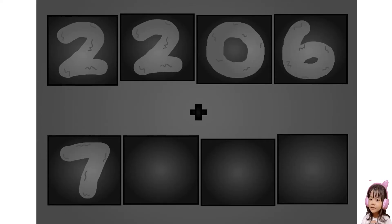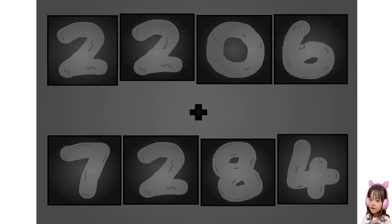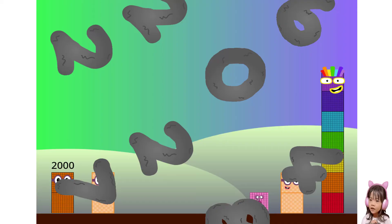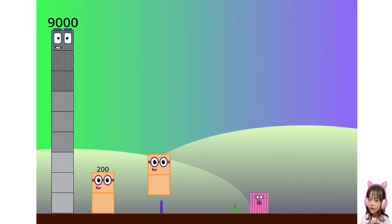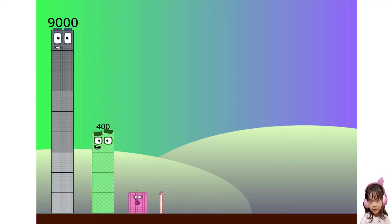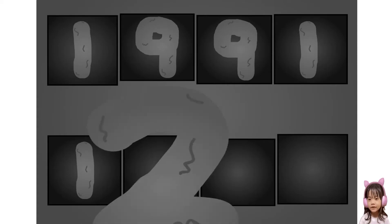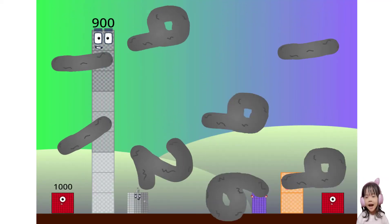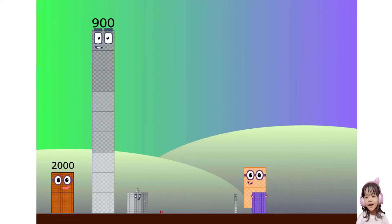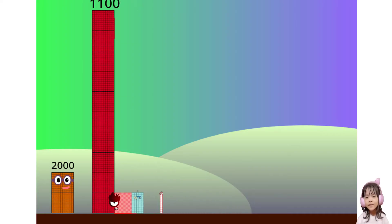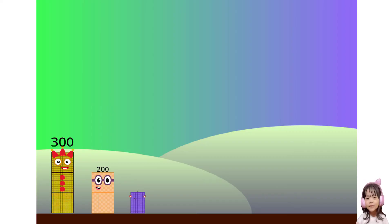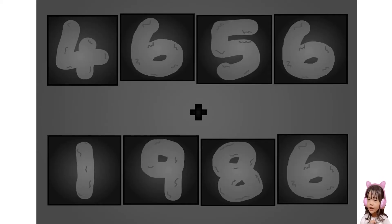Two two zero six plus seven two eight four. These big number blocks are going to show it off by adding. One nine nine nine plus one two six nine. Here they come. Two six five six plus one nine eight six. These big number blocks are going to show it off by adding.